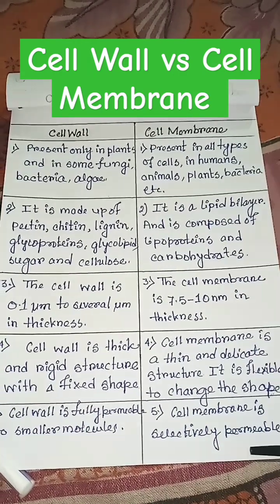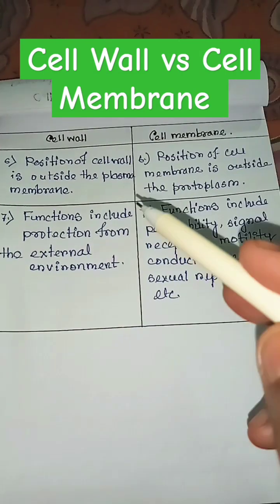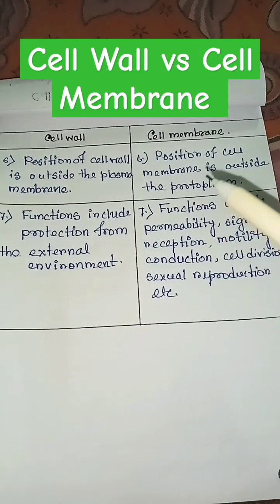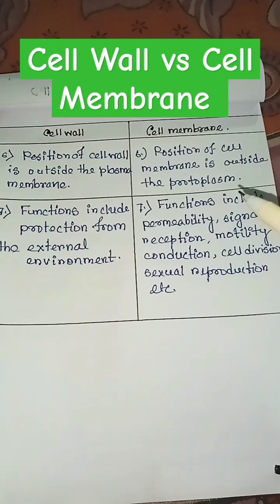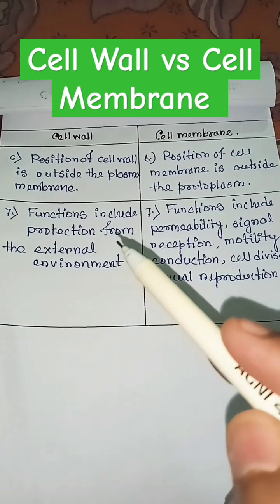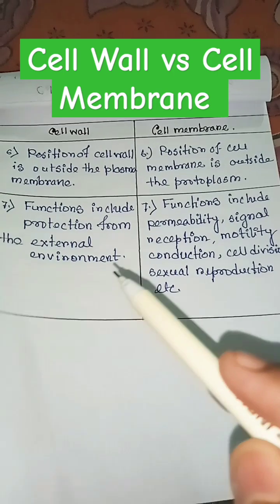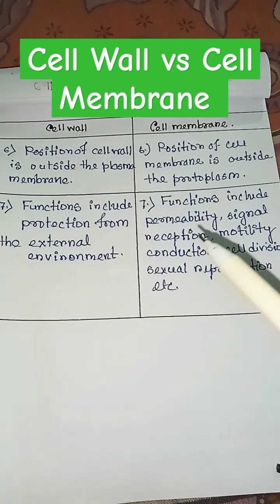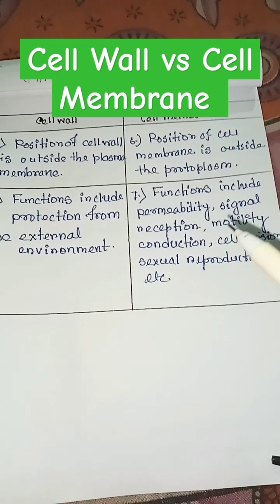The cell wall is fully permeable to smaller molecules, but the cell membrane is selectively permeable. The position of the cell wall is outside the plasma membrane, but the position of the cell membrane is outside the protoplasm. Functions of the cell wall include protection from the external environment, but functions of the cell membrane include...